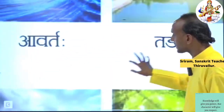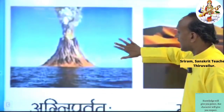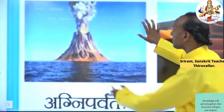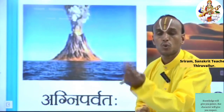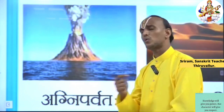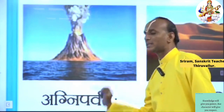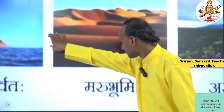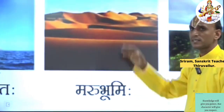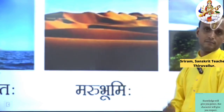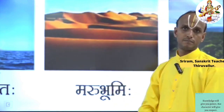Now I will teach you the next line. The first one — Agni Parvataha. What is meant by Agni Parvataha? By seeing this picture you can easily guess — yes, Volcano! In Tamil we say Eri Malai. Then the next one — Marubhoomihi. What is meant by Marubhoomihi? Marubhoomihi means Desert. In Tamil we say Palai Vanam.